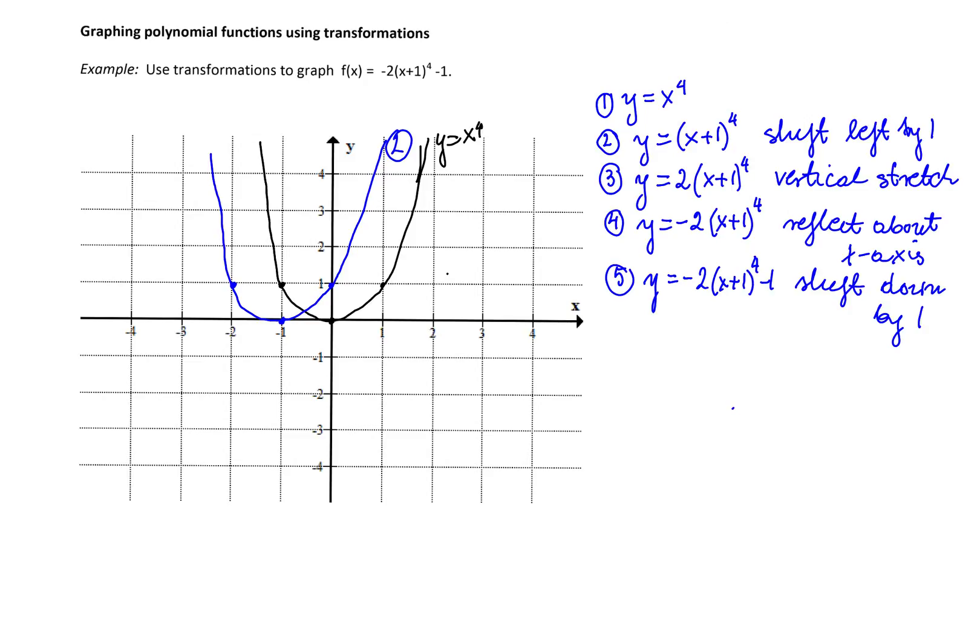Then I will graph the third function, which is the vertical stretch. The stretch is 2 times, so it means y coordinate of each point on the graph is multiplied by 2. Point (0, 0) stays, point (-1, 0) stays where it was. Point (0, 1) will be now point (0, 2).